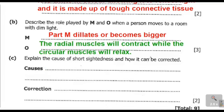We now come to question C right here. Question C reads: explain the cause of short-sightedness and how it can be corrected. So we have the cause and the correction. Short-sightedness is caused by having an abnormally large eyeball or by having a naturally thick lens.